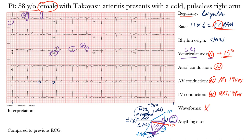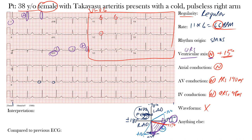Is there anything else we're missing? The R wave progression in the precordial leads: normally the R wave amplitude should progressively increase from leads V1 to V5. In this case, the R wave progression appears quite normal. Looking at V1 through V6 — there are small R waves in V1, and the amplitude progressively increases with each lead, eventually becoming more positive. We call this normal R wave progression.